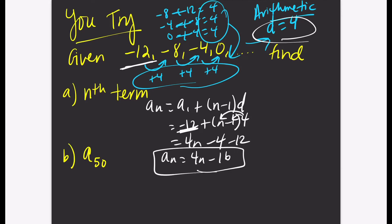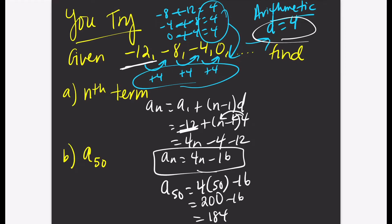Now let's use that to solve part B — find the 50th term. A sub 50: substitute 50 for every n. 4 times 50 is 200, minus 16 gives you 184. So the 50th term is 184.